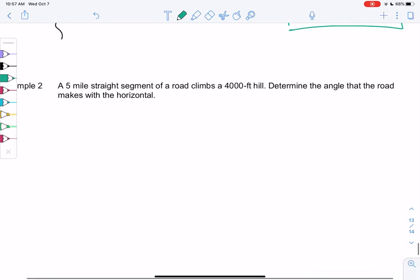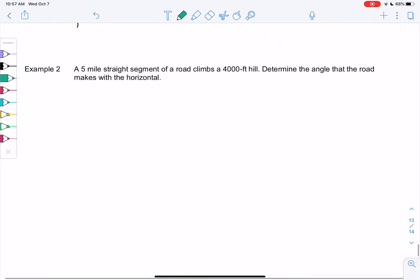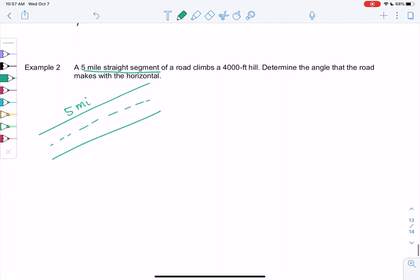Alright, just two more. We have a five mile segment of a road, straight segment. So that makes me think we're going on a road. Here's the road. It's five miles. And it says it climbs 4,000 feet. So that means there's an elevation to it. So this would be vertical. Right? The road itself is not vertical. It's slowly climbing 4,000 feet. And so then the horizontal is unknown.